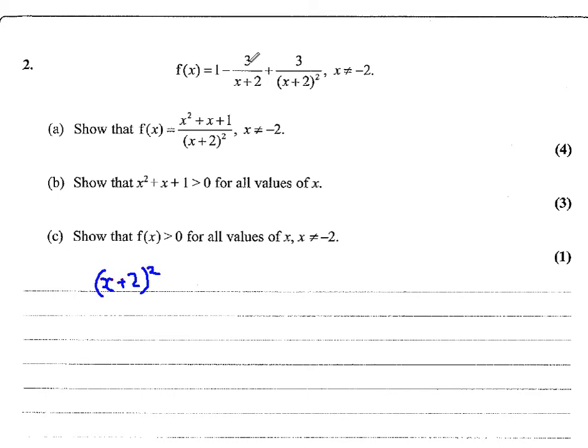The 3, we need to multiply top and bottom by x plus 2 to get it over the common denominator. So minus 3 times x plus 2, and the 3 is already over the denominator we're after, so add 3. And all of that is over the denominator x plus 2 all squared. Now we've got to multiply out and collect like terms.